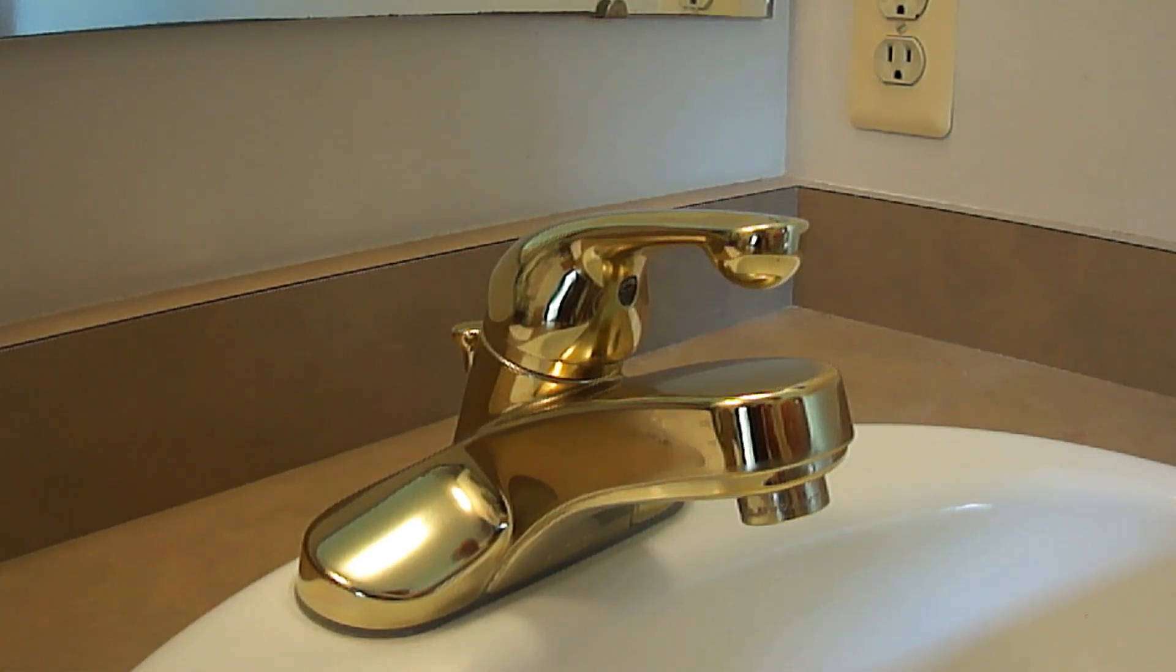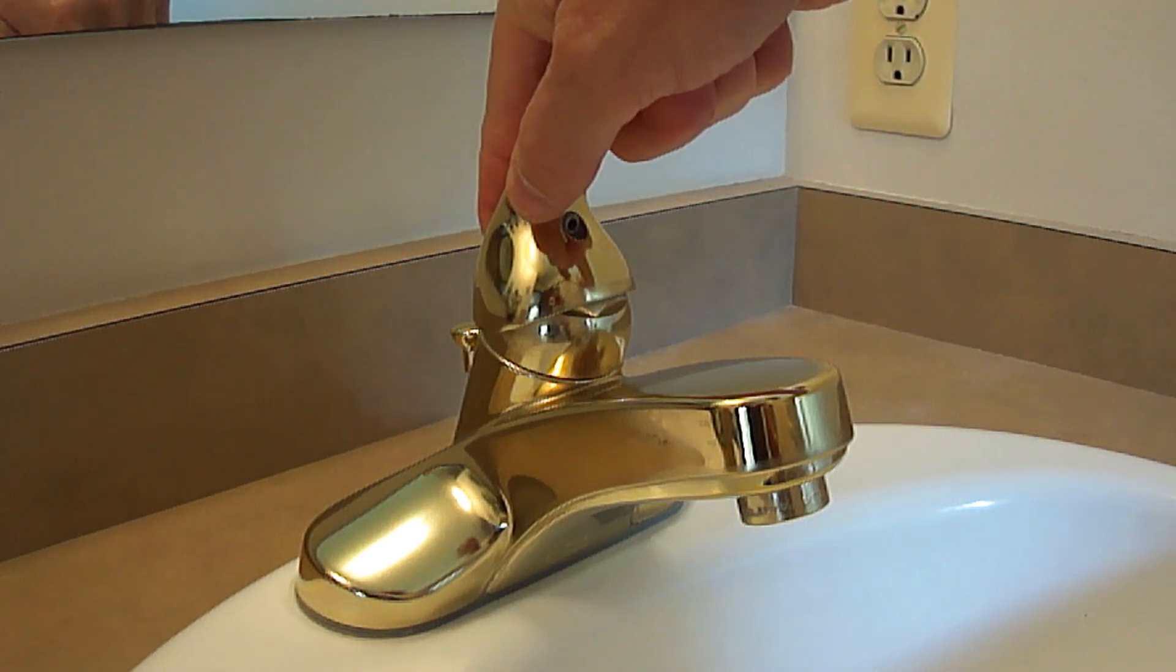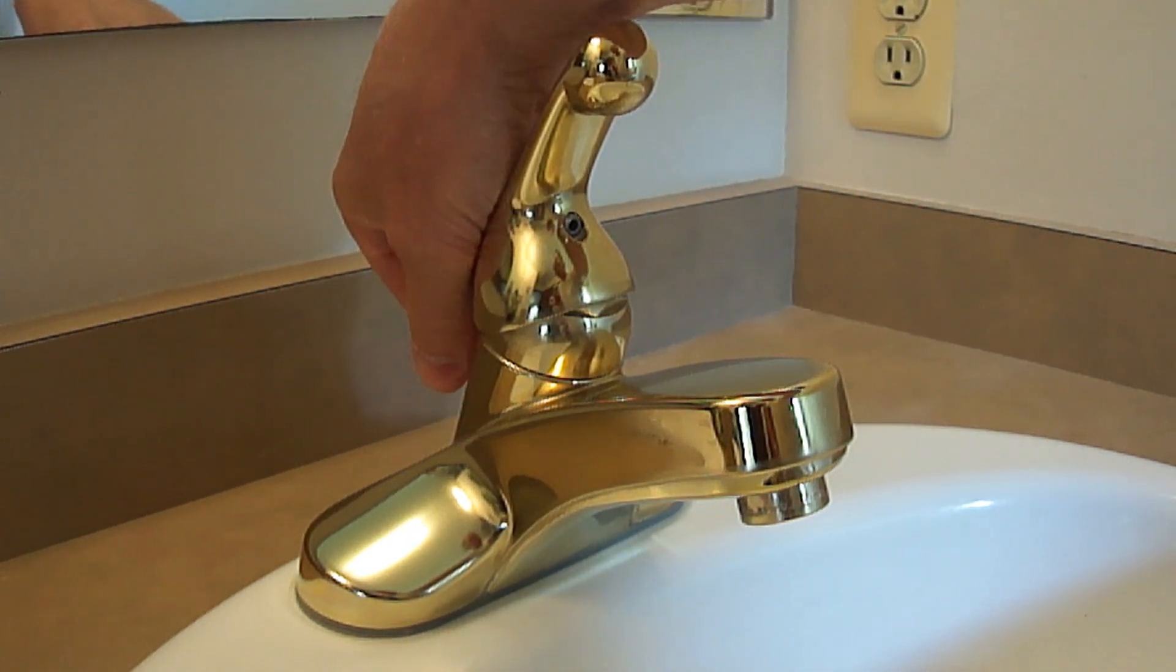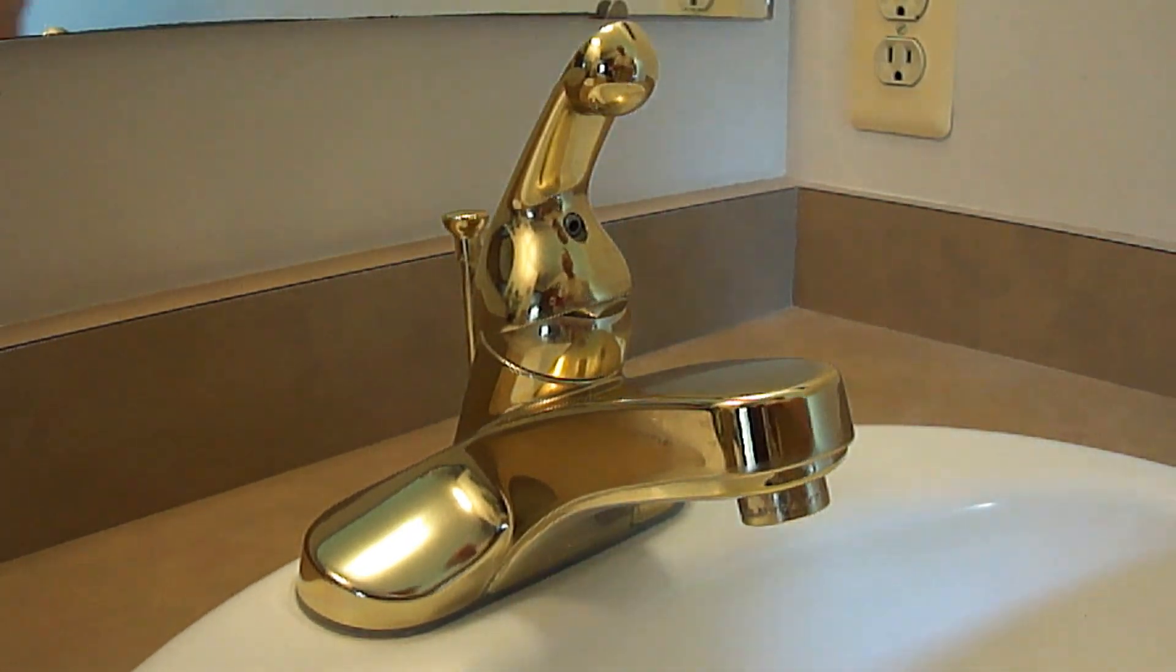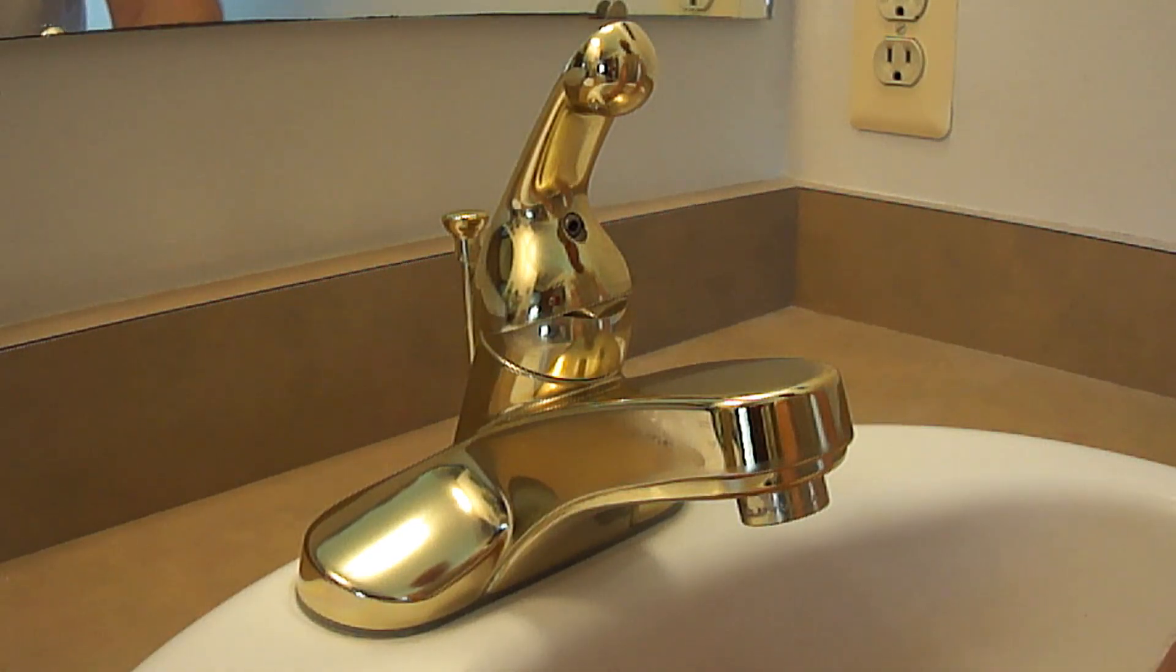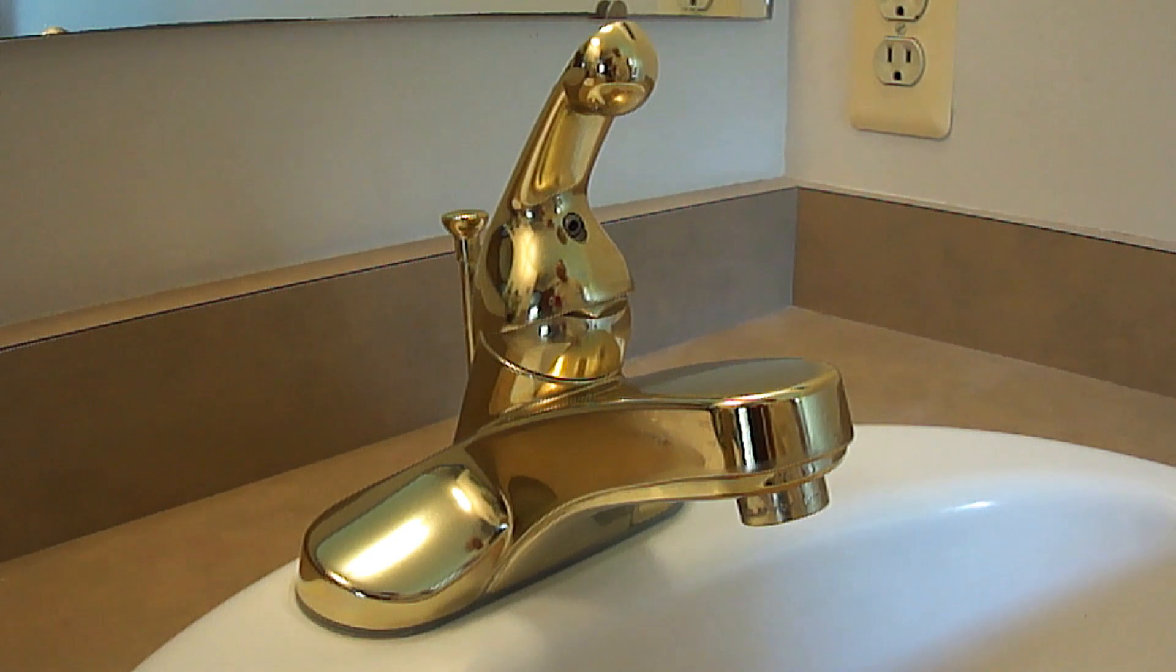Once you have the water shut off, open the faucet to relieve any pressure. Next, close the drain if you have a drain stopper. I also like to put a towel over the drain just for extra insurance, so there's no way any parts will accidentally end up going down the drain.